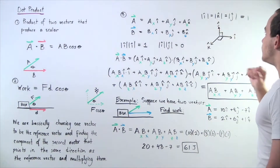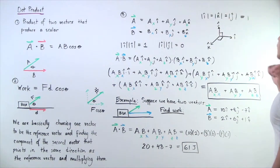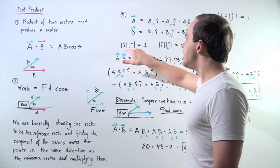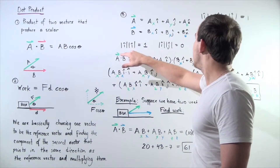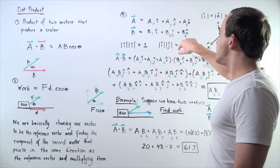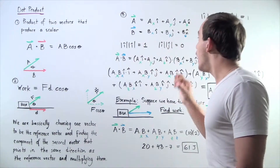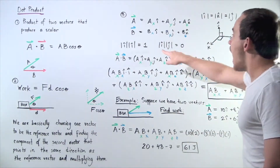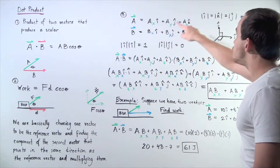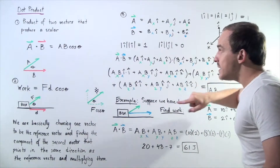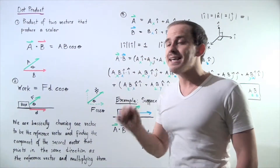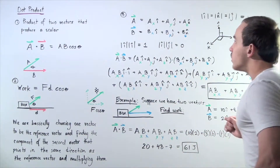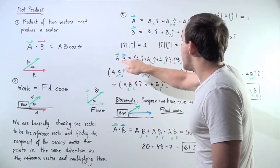For example, i is perpendicular to k, and k is perpendicular to j, and j is perpendicular to i. So if we multiply any two of the same unit vectors together — for example, i times i, or k times k, or j times j — we get one. But if we multiply i times j, or i times k, or j times k, we get zero, because the cosine of the angle between them — cosine of 90 degrees — is zero.